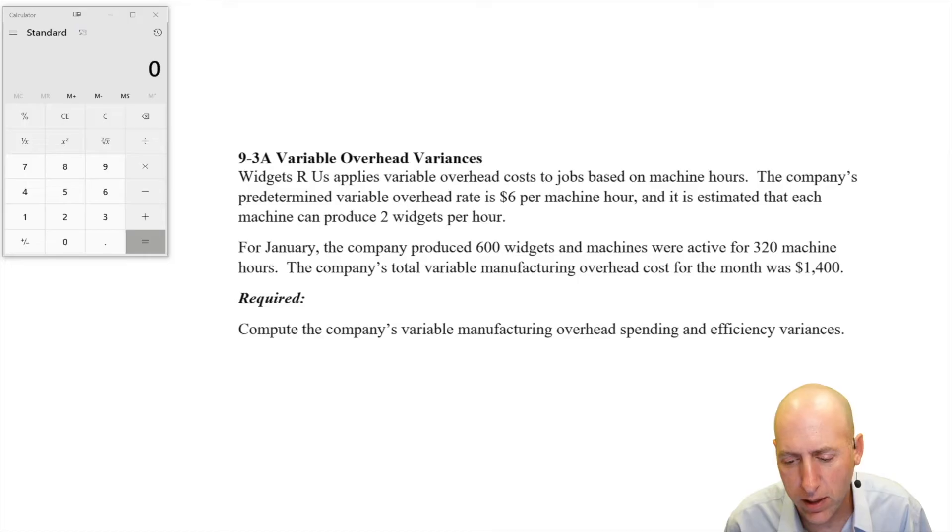Widgets R Us applies variable overhead costs to jobs based on machine hours. The company's predetermined variable overhead rate is $6 per machine hour. That looks like a standard price for overhead, right? That looks like an SP kind of a number. And it is estimated that each machine can produce two widgets per hour.